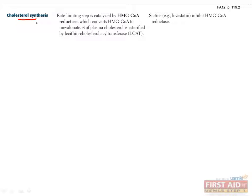In this last part of biochemistry, we'll talk about cholesterol metabolism, lipid transport, lipoproteins, and dyslipidemias. Cholesterol is an important part of cell membranes and is also the precursor to bile acids, steroid hormones, and some vitamins. It can be synthesized in the smooth endoplasmic reticulum of any cell in the body, although it's mostly made in the liver.